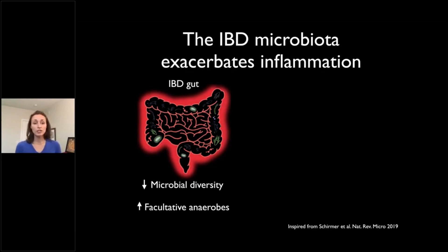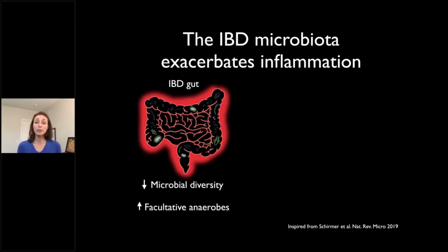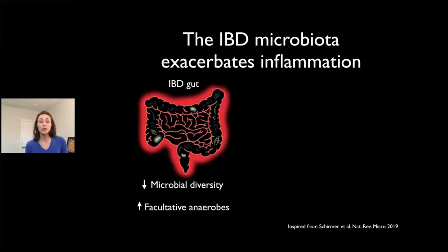Here, the term facultative anaerobes refers to bacteria that are able to tolerate oxygen. Oxygen is not normally present in the gut — the gut is actually anaerobic, meaning it has no oxygen in a normal, non-inflamed state. During inflammation, the gut produces a lot of oxygen which permeates from the intestinal tissue. These facultative anaerobes tolerate that oxygen and also tend to promote inflammation because they are trying to foster their own growth.